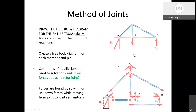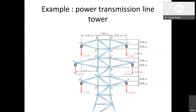We keep on moving from one joint to another joint — that is the method. We will see examples to understand it better. Here is an example of a power transmission line tower, similar to the ones visible from outside the office. The dimensions may differ, but this is a typical configuration. Let's solve this example.